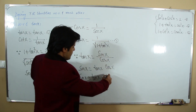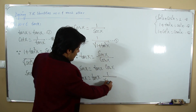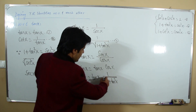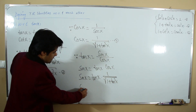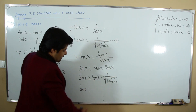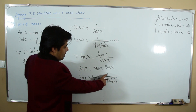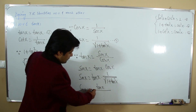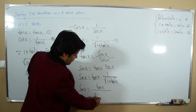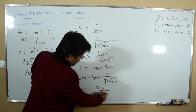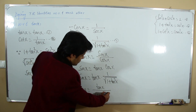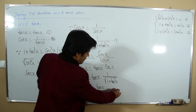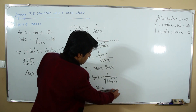Substituting cos x = 1/√(1 + tan²x): sin x = tan x / √(1 + tan²x). This is our fifth relation.